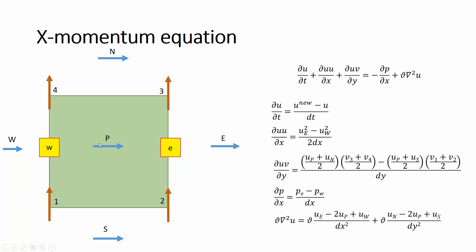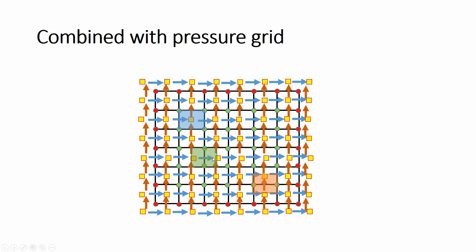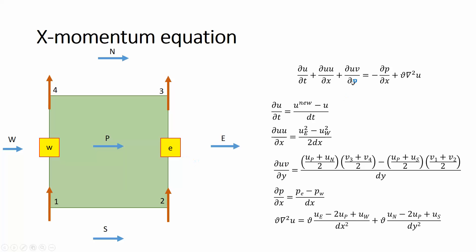Let's talk about the X momentum equation. For the X momentum I want the U velocity control volume. The U velocity in question has a control volume, with pressure at points labeled small 'e' and small 'w' (east and west), and surrounding U velocities labeled P, east, west, north, and south, plus four neighboring V velocities labeled 1, 2, 3, 4.